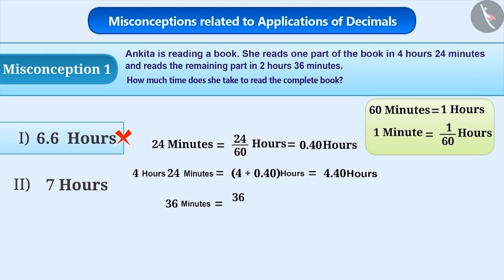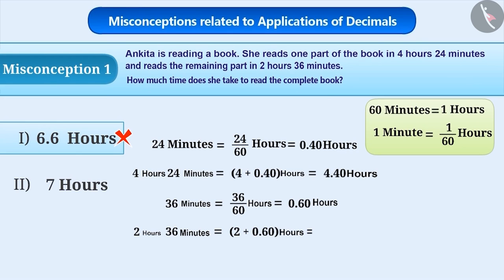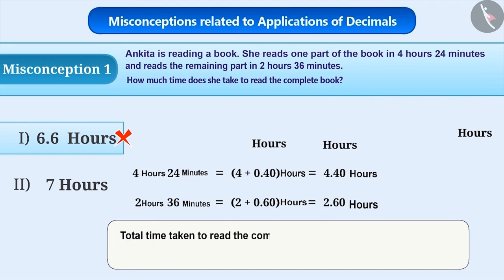Similarly, 36 minutes equals 36 by 60 hours equals 0.6 hours, and 2 hours 36 minutes equals 2 plus 0.6 hours equals 2.6 hours. Total time taken to read the complete book is equal to 4.4 hours plus 2.6 hours, which is equal to 7 hours.